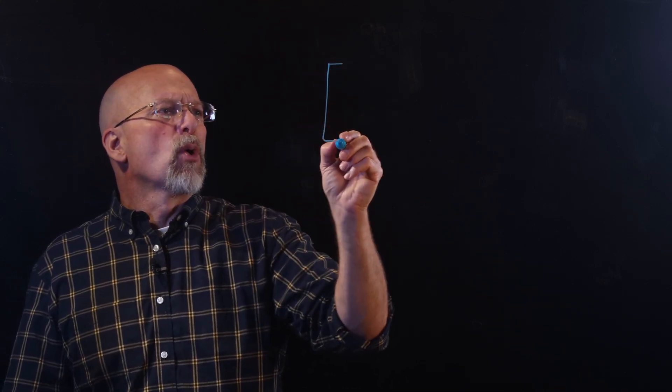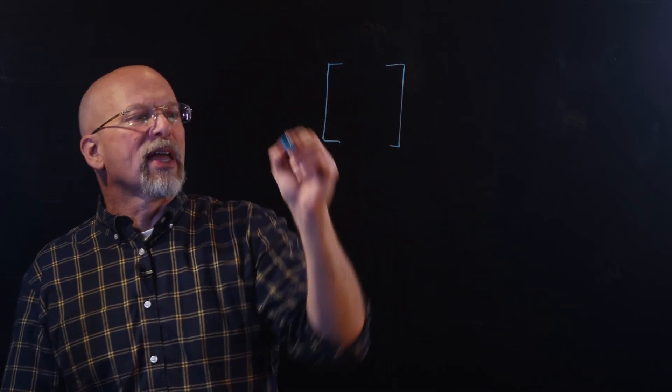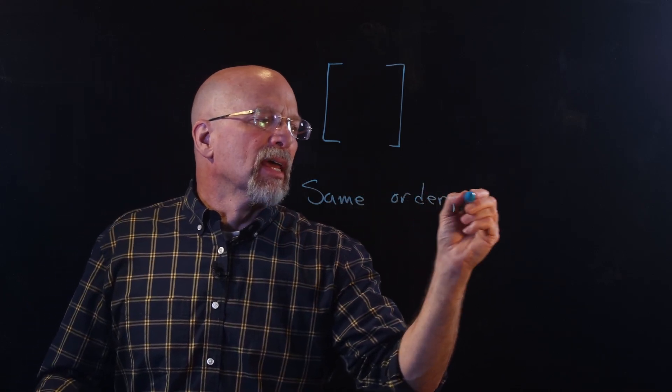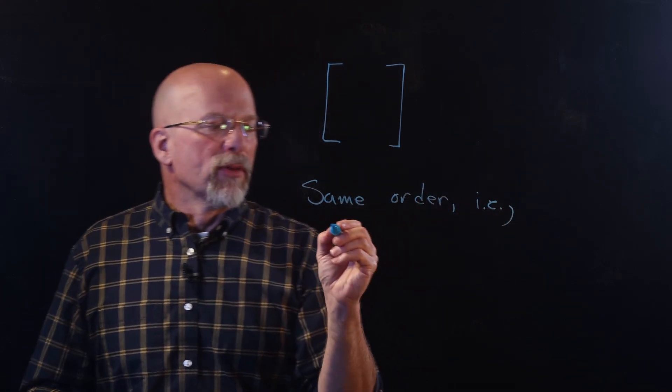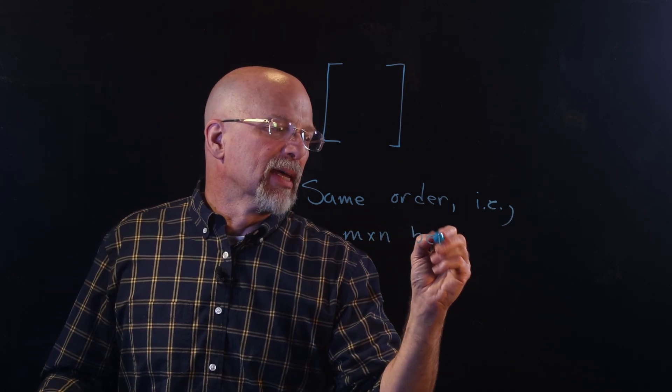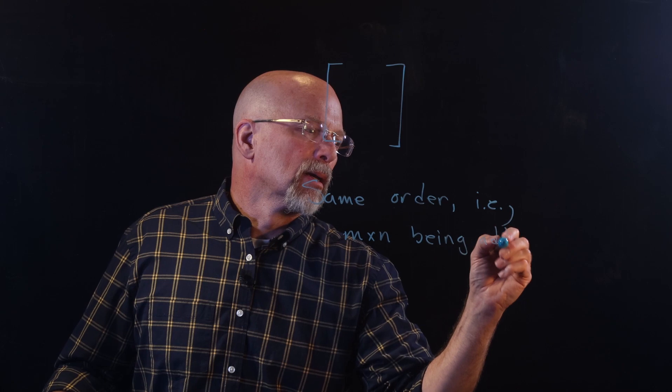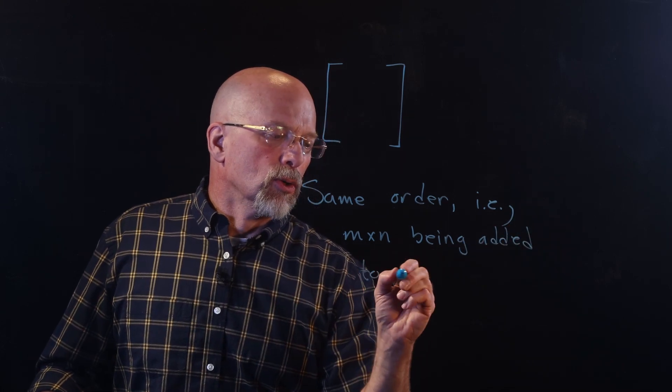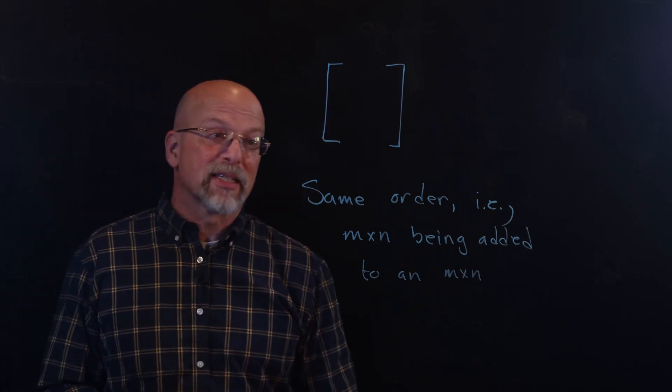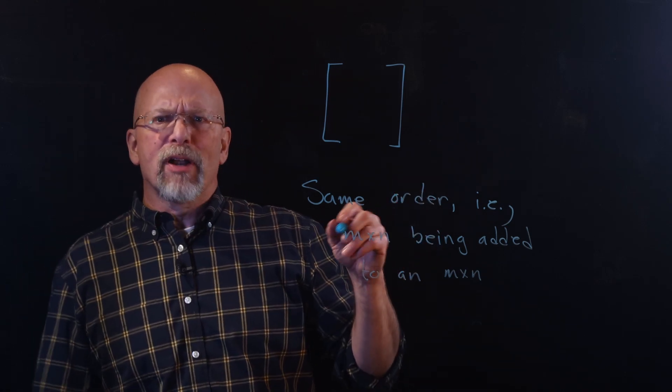Let's talk a little bit about this. First of all, whenever we add two matrices, it's really important that we know that they have the same order. In other words, we've got an M by N matrix being added to an M by N matrix. The dimensions have to be exactly the same.